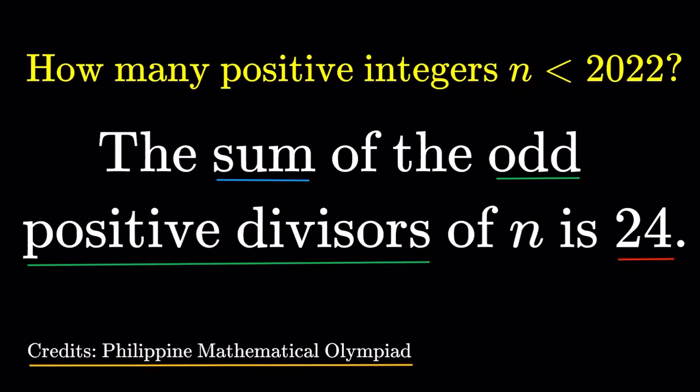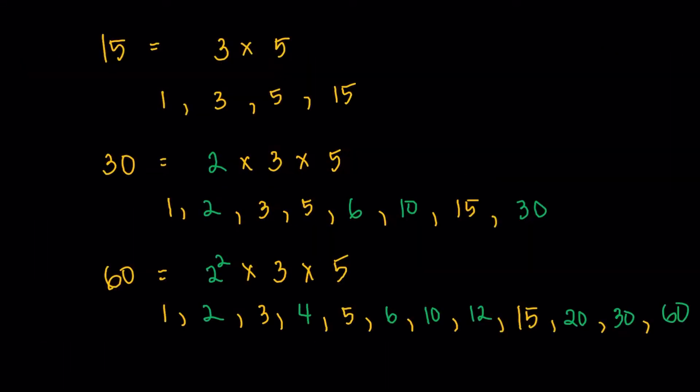Now to make my point clear, here's an example. I have 15, 30, and 60. I'm going to prime factorize it. I'll just list down the factors. And I've highlighted the even factors in green. Now what the numbers have in common is that it's just 15 times a power of 2, right? Now I chose 15, 3 times 5, because it's the smallest two prime numbers multiplied together.